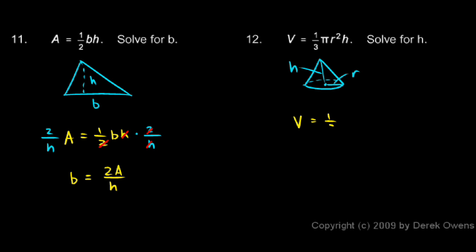We'll write v equals 1 third pi r squared h. And to isolate the h, I'm going to multiply both sides by 3 over pi r squared.